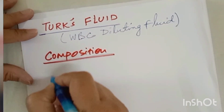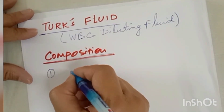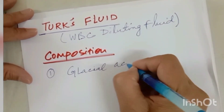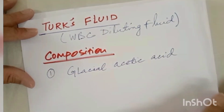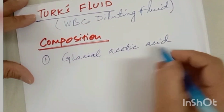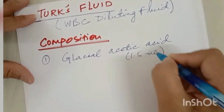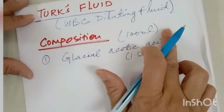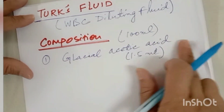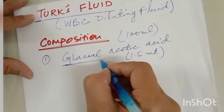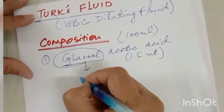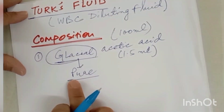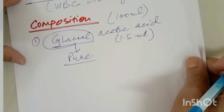The Turk's fluid is composed of — the first constituent is glacial acetic acid. We take 1.5 ml of glacial acetic acid to make 100 ml of Turk's fluid. What does 'glacial' mean? Glacial means pure — that is, pure acetic acid. This is a commonly asked question. Glacial means the pure form of acetic acid. And what is the role of this glacial acetic acid?